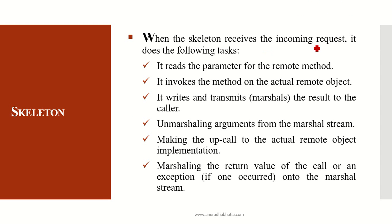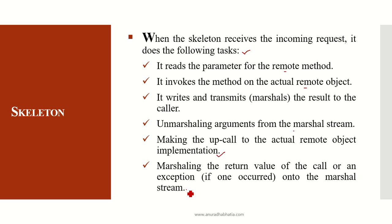In detail, when the skeleton receives the incoming request: it reads the parameter from the remote method, invokes the method on the actual remote object, and writes and transmits the result to the caller. It then unmarshals the arguments from the marshal stream, makes an upcall to the actual remote object implementation, and marshals the return value — or any exception that occurred — onto the marshal stream. All exceptions are recorded, covering all data structures transferred between address spaces.